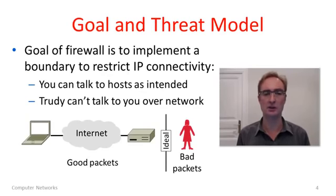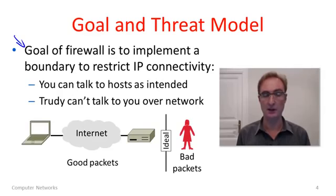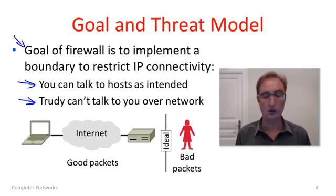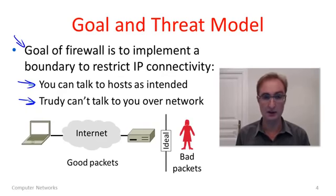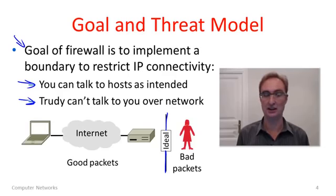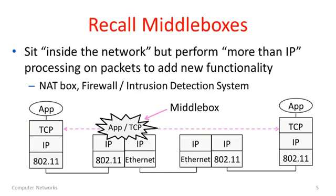Let's move to a goal and threat model to understand what we're trying to accomplish. With a firewall, our goal is to implement some kind of network boundary at the entrance to your network — your home network or a corporate network — that restricts IP connectivity so that you can talk to a host on the public internet just as you wanted, but Trudy is kept out and unable to talk to hosts on your local network. Ideally we'd partition the internet so Trudy is kept on one side with all her bad packets, while you can use the internet and talk to the hosts you actually want to.